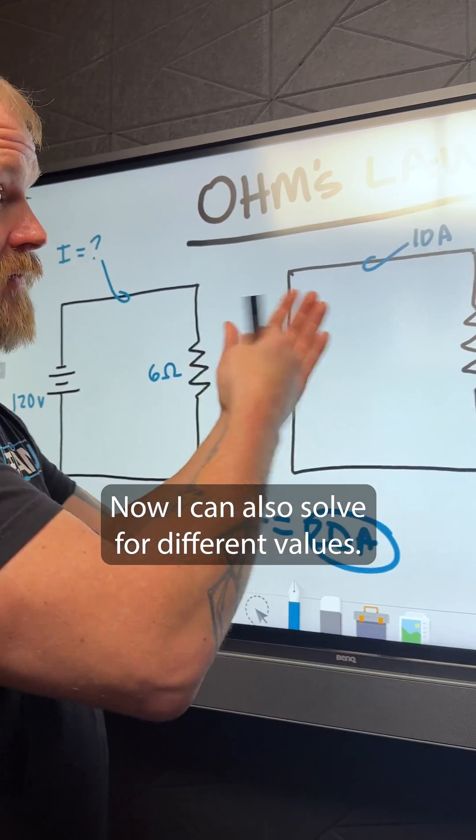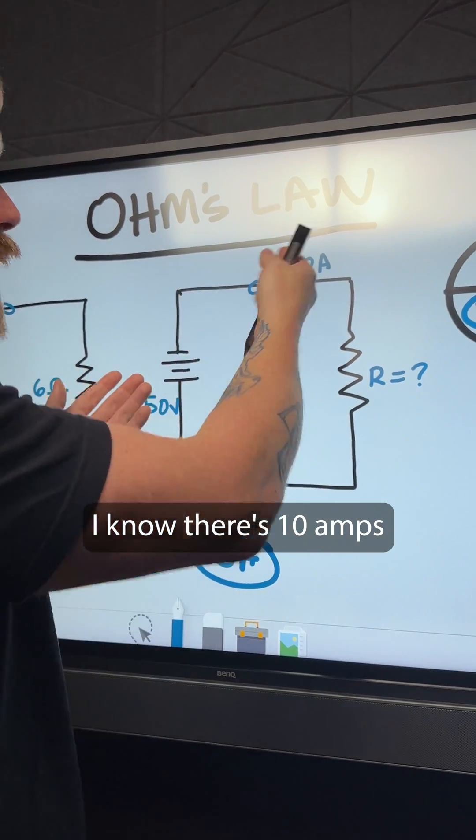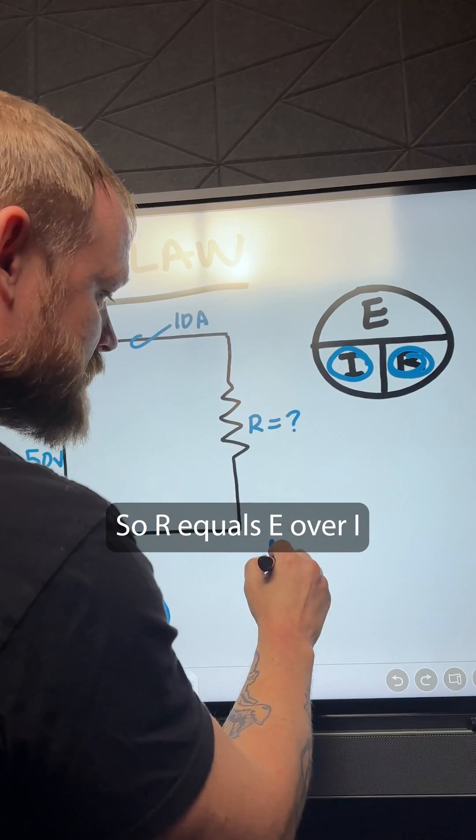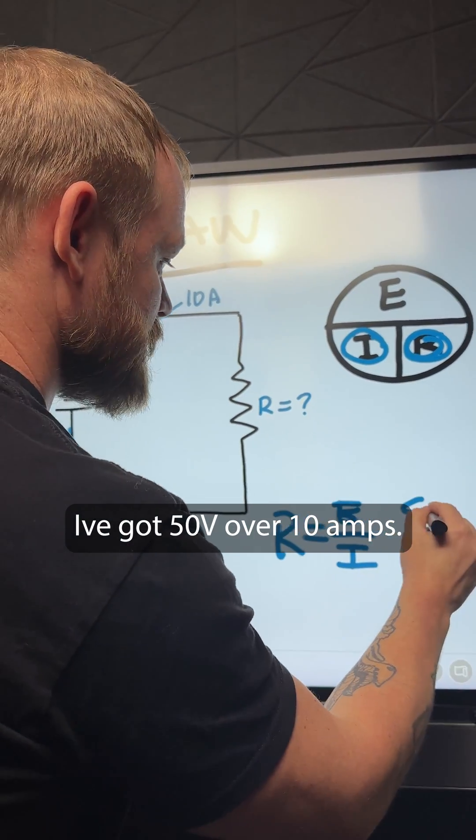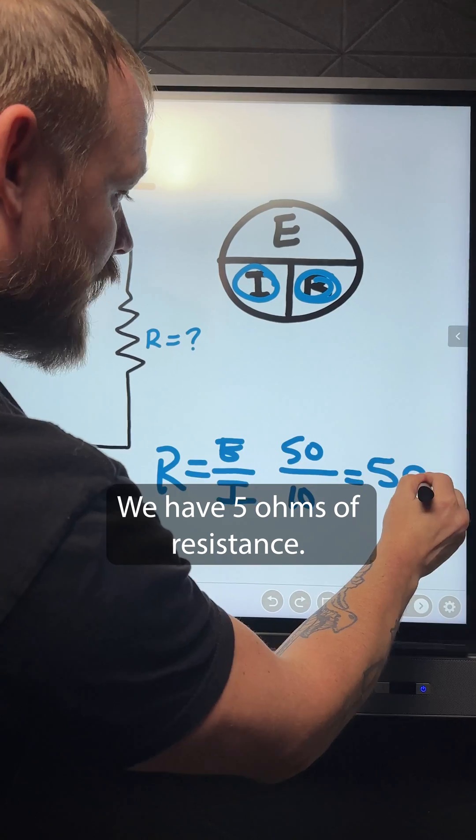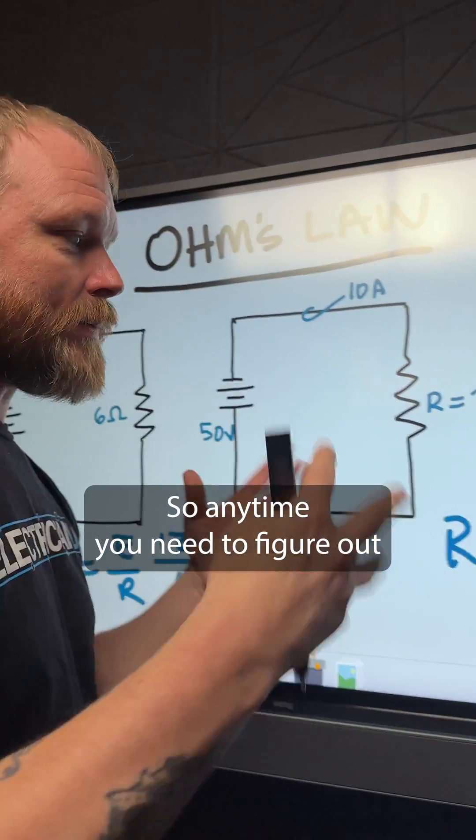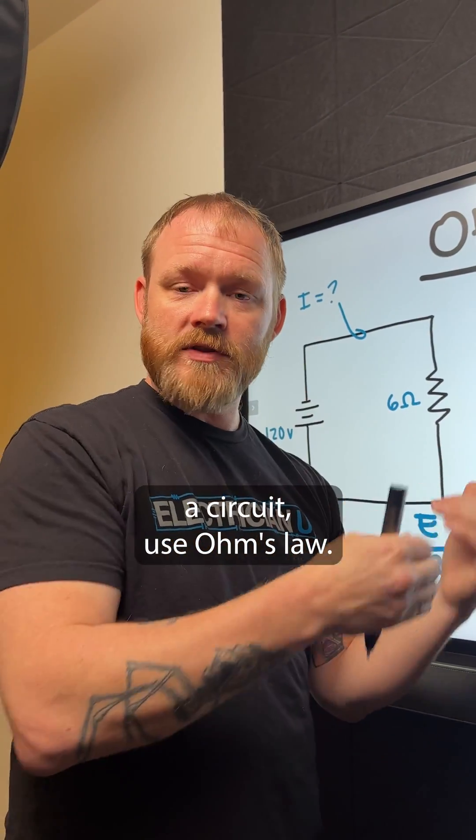Now I can also solve for different values. So over here, I have a 50-volt circuit. I know there's 10 amps flowing with my ammeter. So R equals E over I. We've got 50 volts over 10 amps. We have 5 ohms of resistance. So anytime you need to figure out some kind of unknown in a circuit, use Ohm's Law.